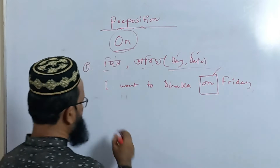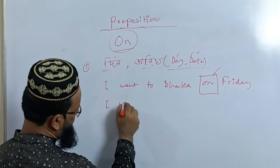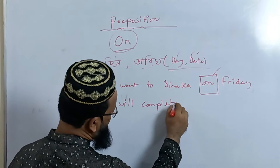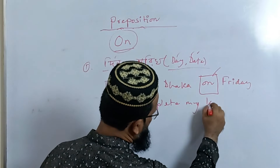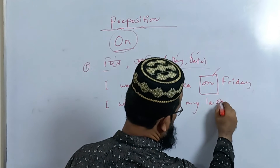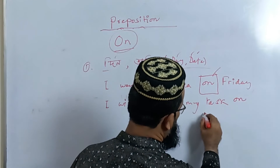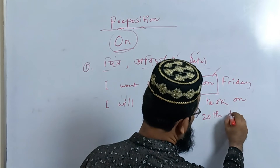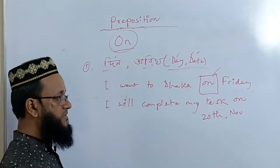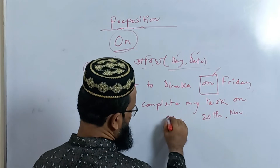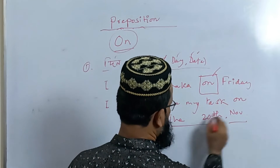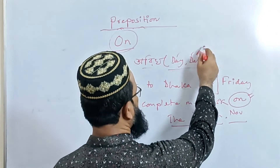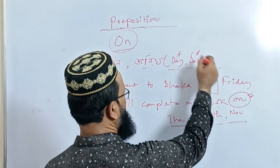Similarly, if we have given a specific date, we also use ON. For example: I will complete my task on 20th November. If you have a specific date or a specific day, we use the ON preposition.